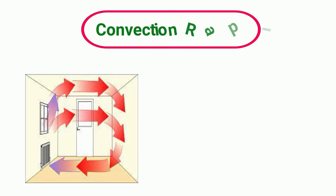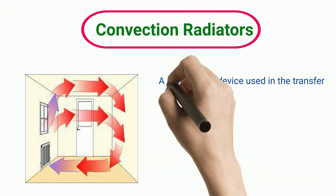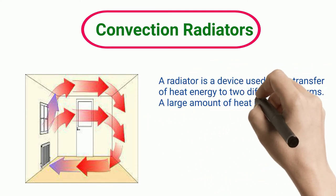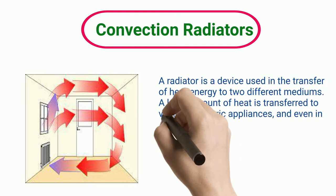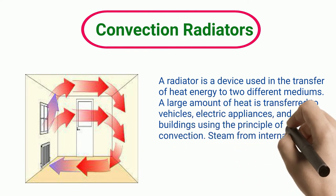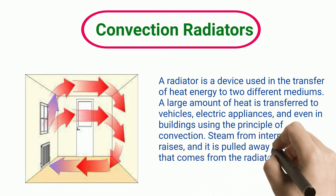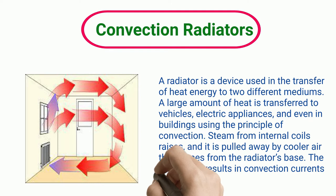Convection Radiators: A radiator is a device used in the transfer of heat energy to two different mediums. A large amount of heat is transferred to vehicles, electric appliances, and even in buildings using the principle of convection. Steam from internal coils raises, and it is pulled away by cooler air that comes from the radiator space. The movement results in convection currents that equally distribute warm air.